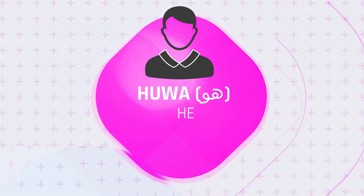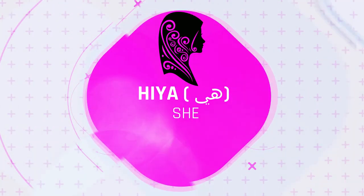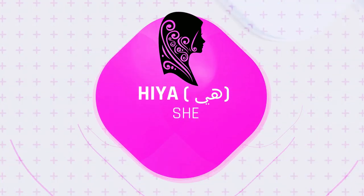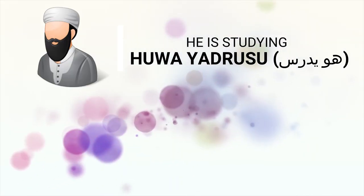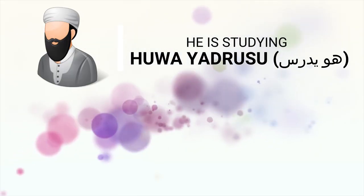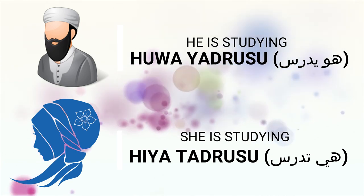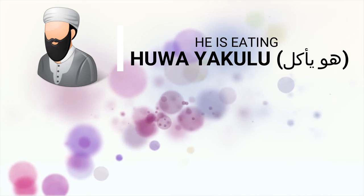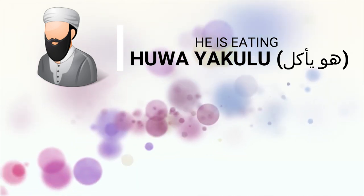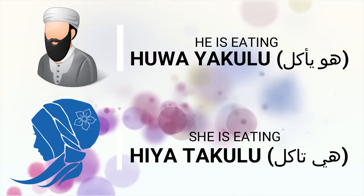Hua — he. Repeat: hua means he. And hea means she. Repeat: hea — she. He is studying in Arabic: hua adrusu. Hua adrusu. Hua — he is eating. Hua — he is eating.